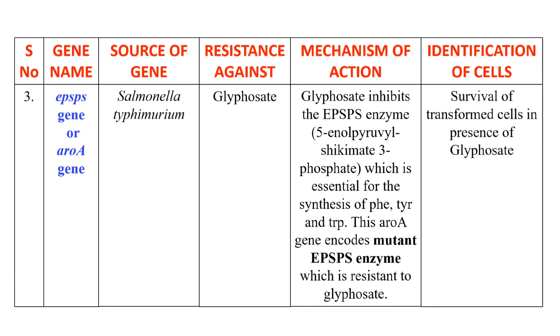Cells which contain this gene — the transformed cells — will survive in the presence of herbicide glyphosate, whereas the non-transformed cells will not survive the glyphosate treatment.